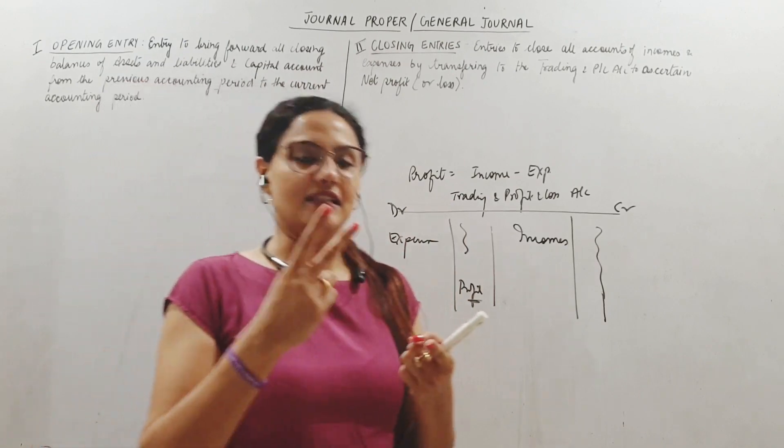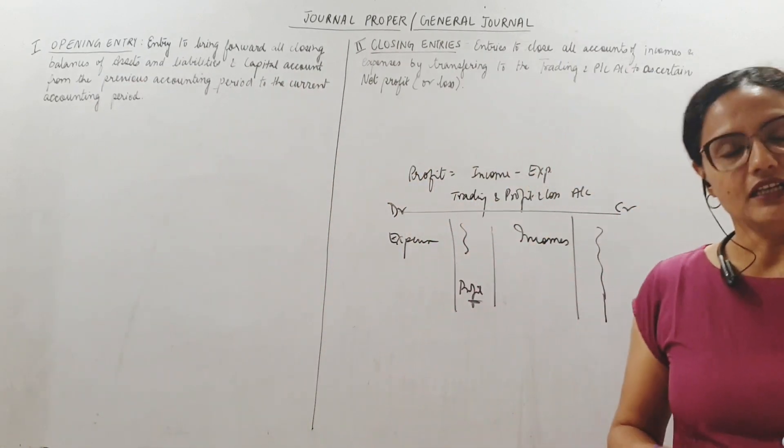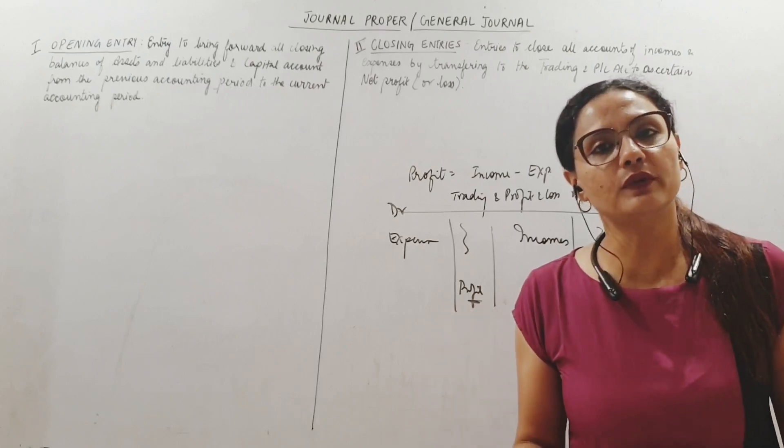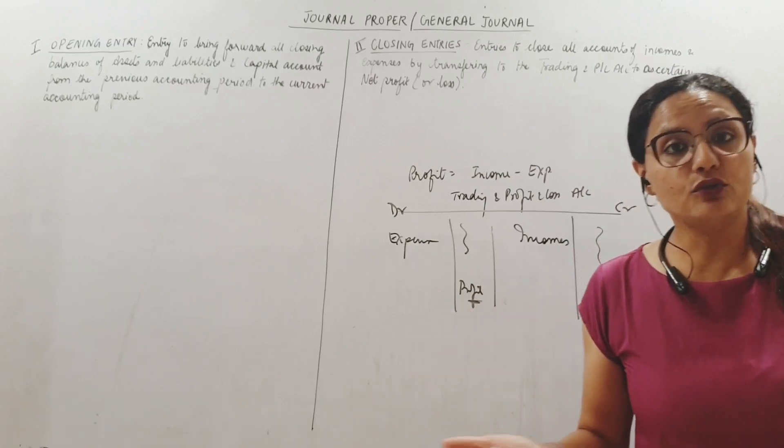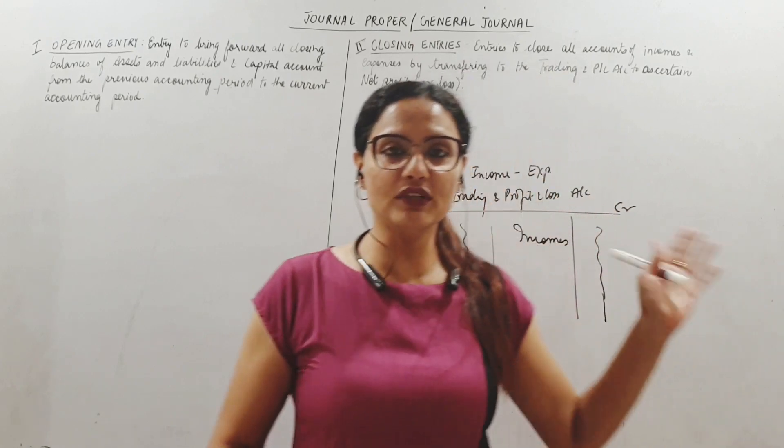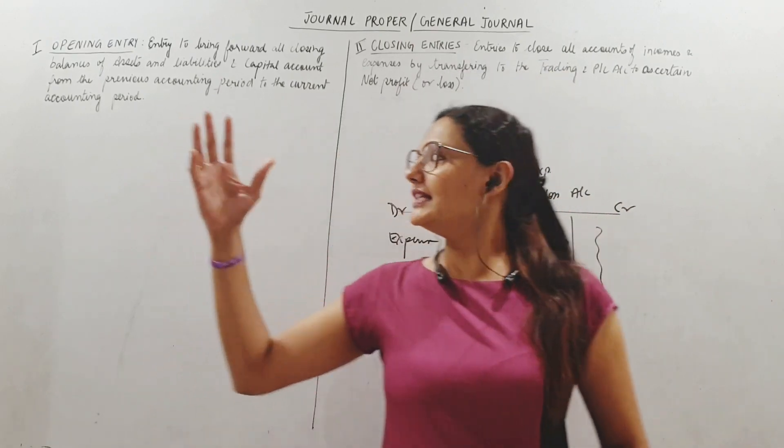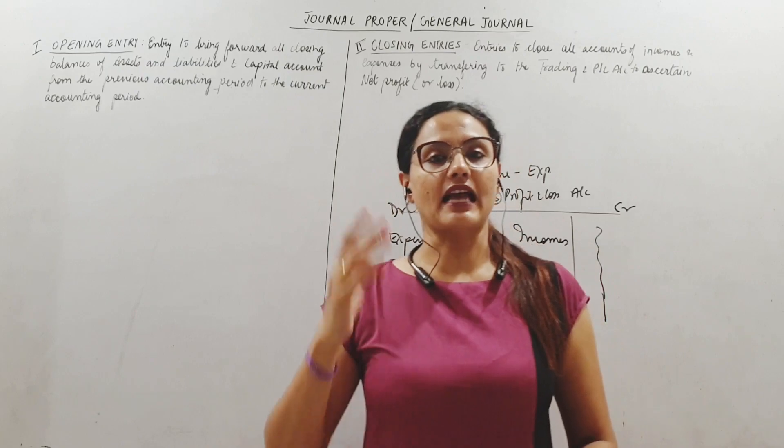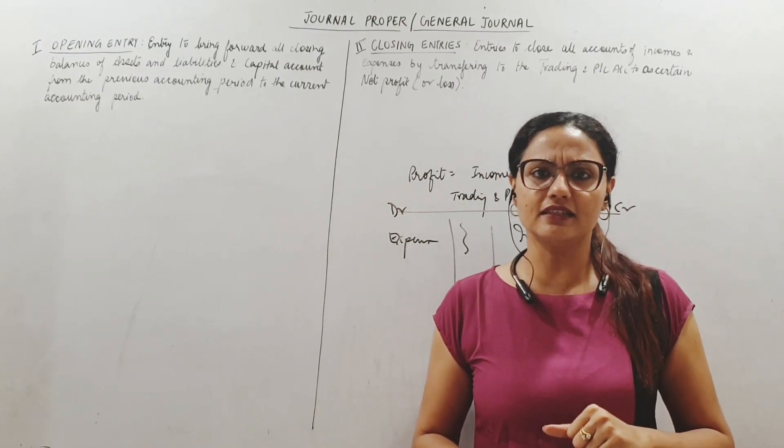What are the other three types of accounts that are left? Assets, liabilities, and capital. They do not affect my profit or loss calculation - only income and expenditure do. So these assets, liabilities, and capital will be there in the next year also.